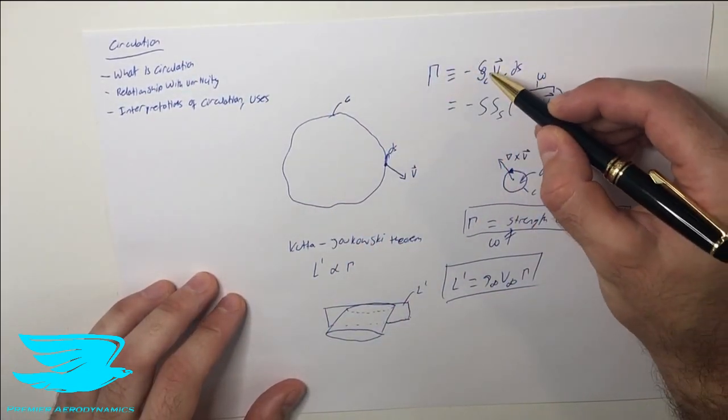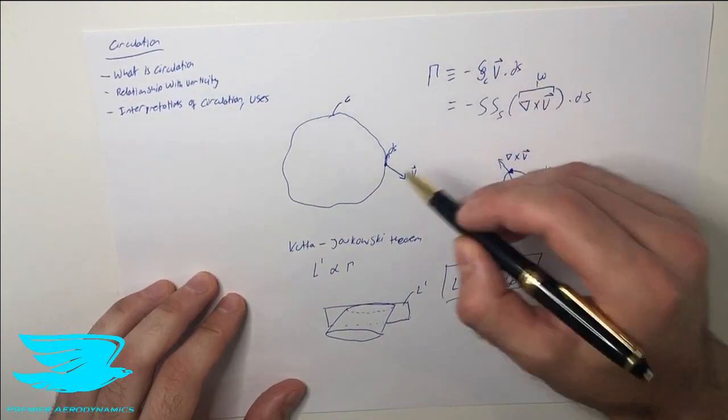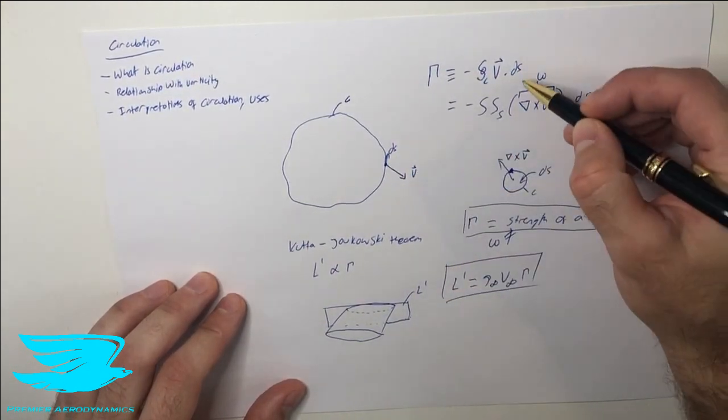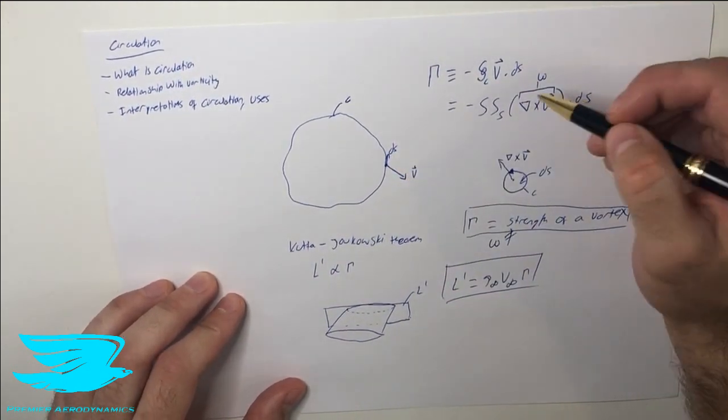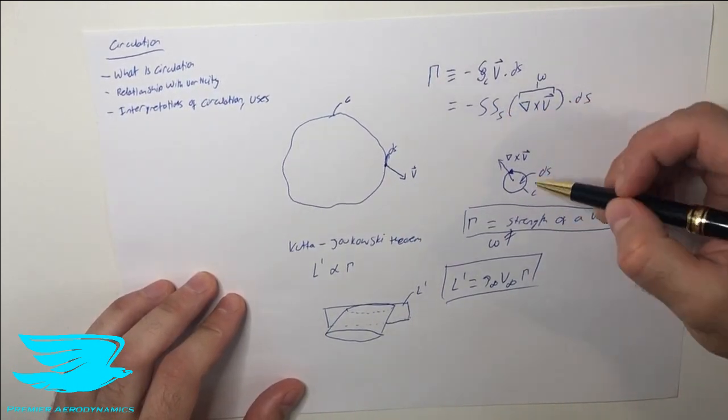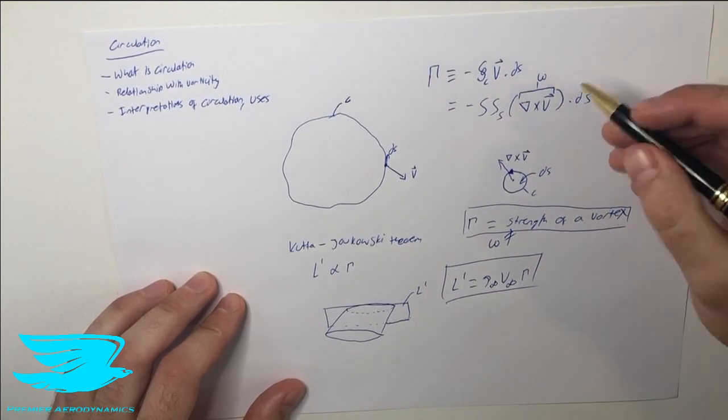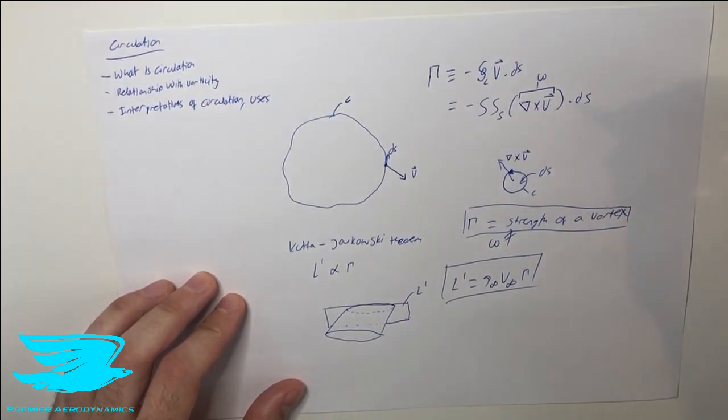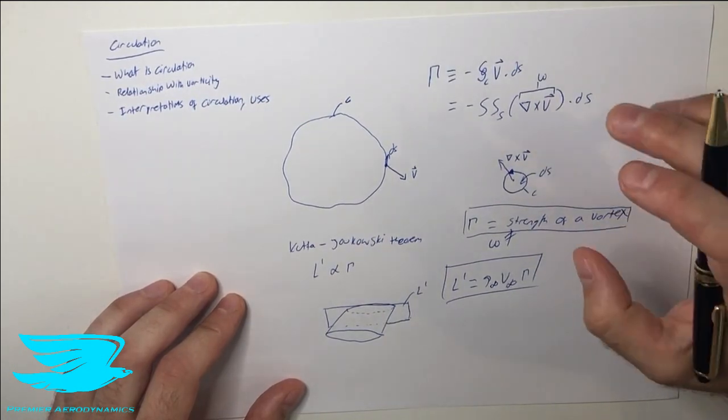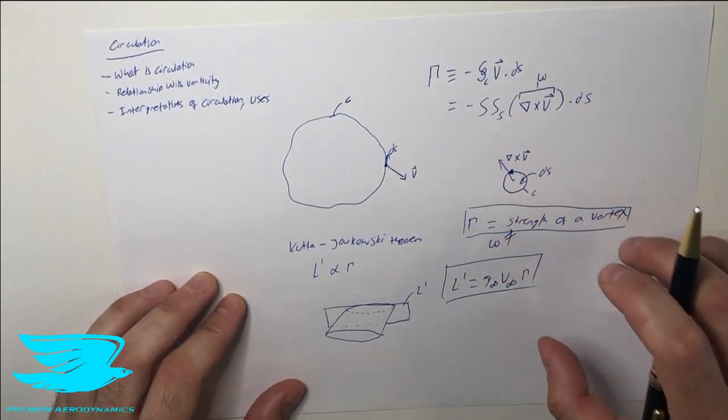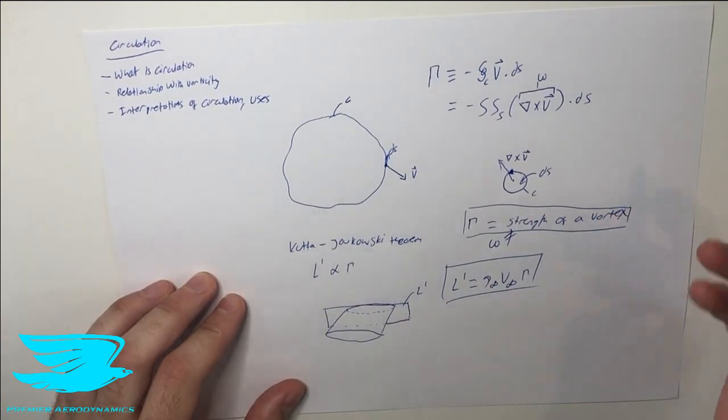This circulation is now defined as the negative of the closed loop integral of the velocity vector with ds. This also equals the negative of the area integral of the vorticity, del cross with the velocity vector, times ds.